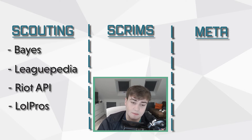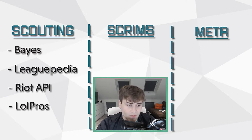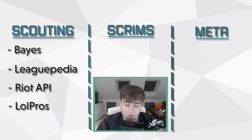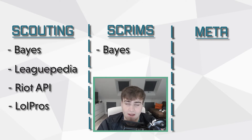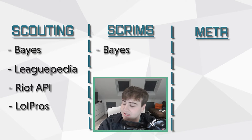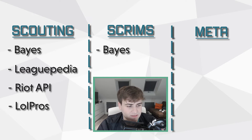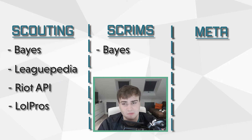On to scrims. It wasn't actually possible to grab any scrim data before, unless you had some sort of client magic running. Currently, Bayes is basically the only source of scrim data. It used to be possible to use the Riot API to track custom games, although that functionality was revoked very recently — about last month — which is a bit of a shame, but everyone in ERLs and higher doesn't really mind because we now have Bayes, which is a much better alternative.